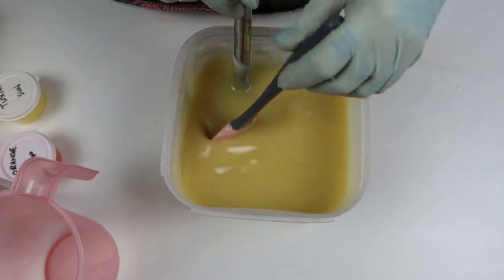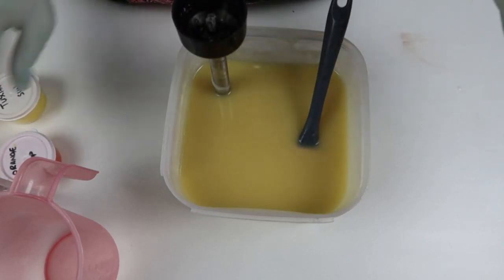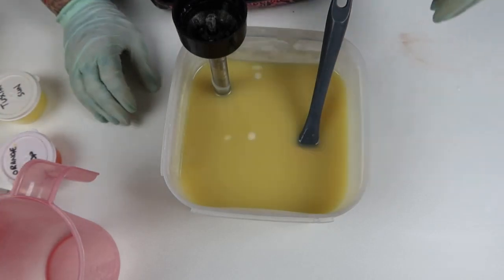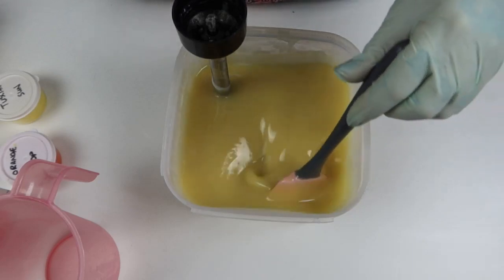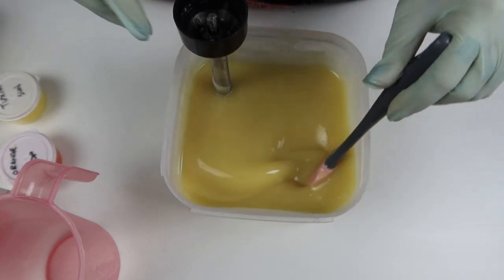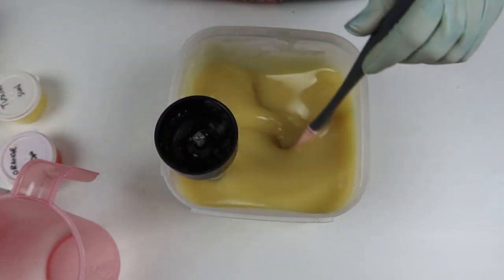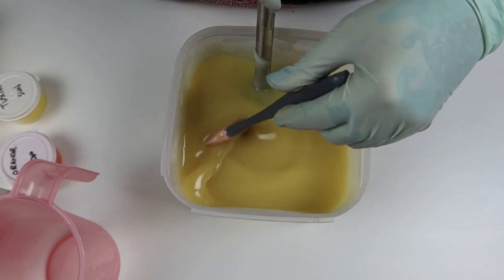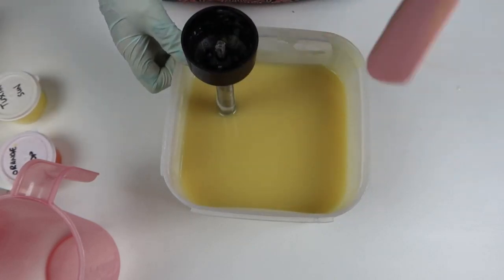So I thought what I will do is color and fragrance the majority of the soap with orange. A lot of orange. And then keep some aside and color it with yellow and not put any fragrance in it and do a drop swirl and see what happens. I don't even know how this behaves, so it may not even be viable to do a drop swirl.